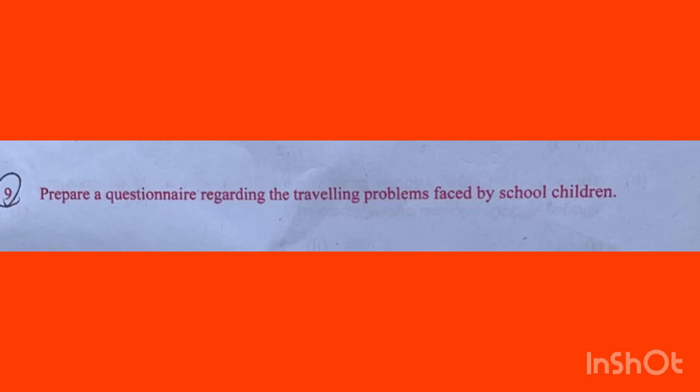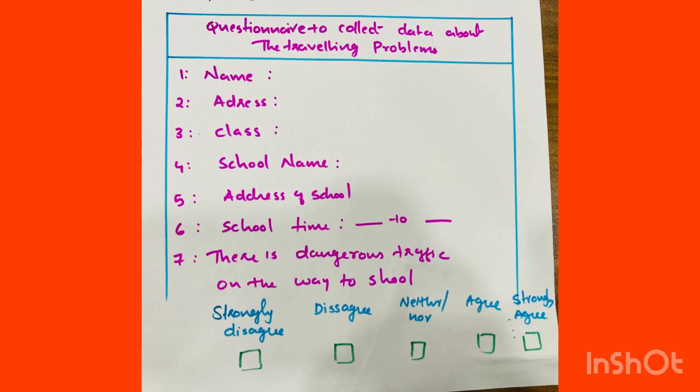Prepare a questionnaire regarding the travelling problems faced by school children. The questionnaire is a format with a heading, a structured general section, and a specific guide. If you have questions about the data and have answered them, you can validate the question, and the structure is answered.